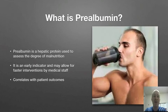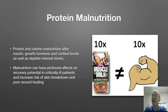So protein malnutrition — let's talk a little bit about that. Protein and calorie malnutrition alter insulin, growth hormone, and cortisol levels. It can deplete mineral stores, and malnutrition can have a profound effect on the recovery of the critically ill patient and increase the risk of skin breakdown and poor wound healing.